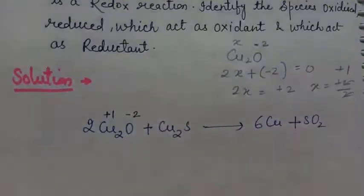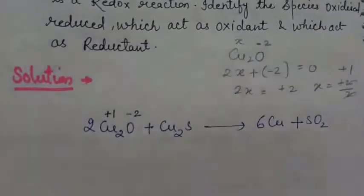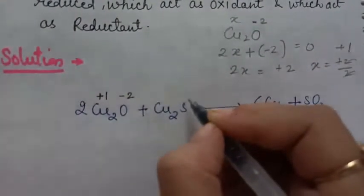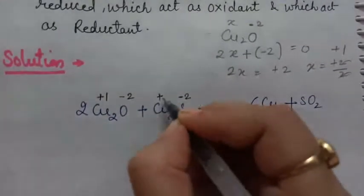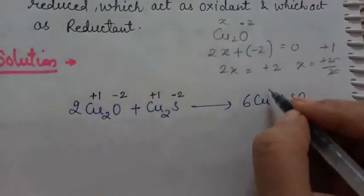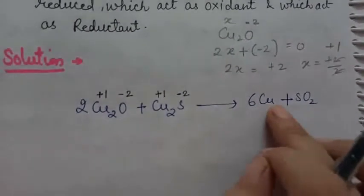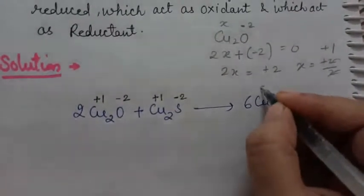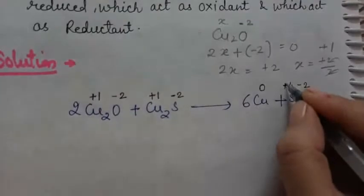Now for Cu₂S: sulfur is in the −2 oxidation state, so copper will be in the +1 oxidation state. For elemental copper on the product side, any species in elemental state has an oxidation state of 0. For SO₂: oxygen is −2, so sulfur will be in the +4 oxidation state.